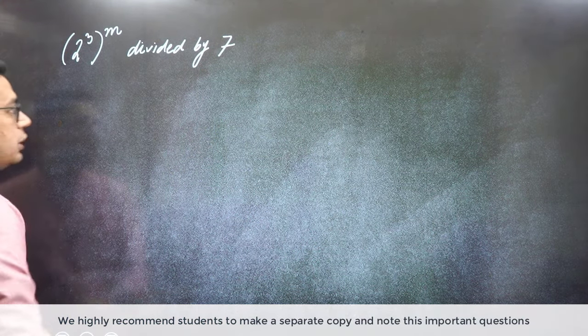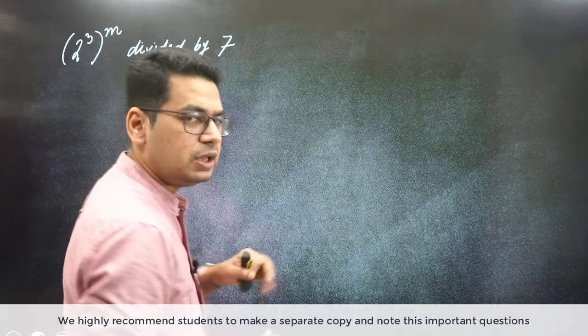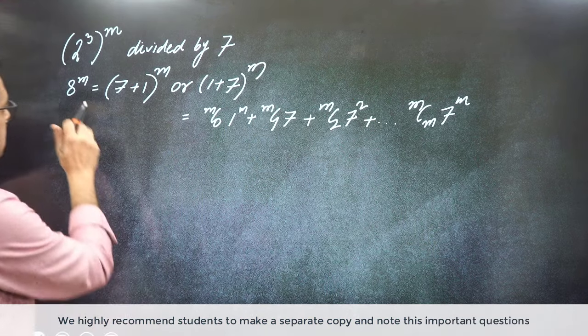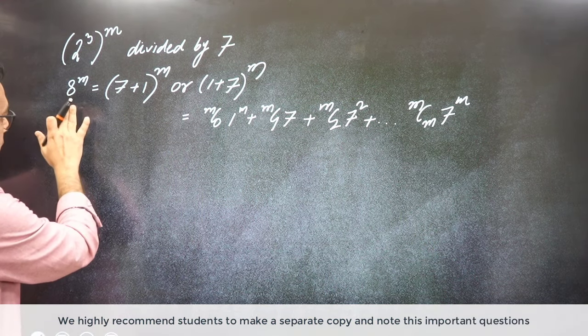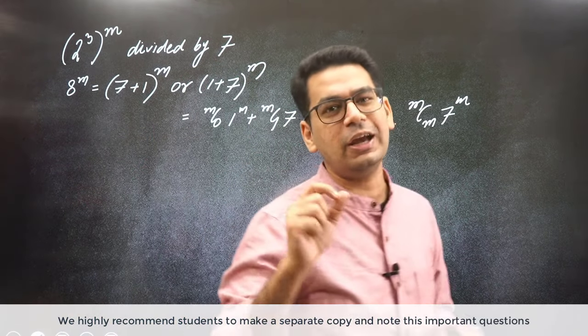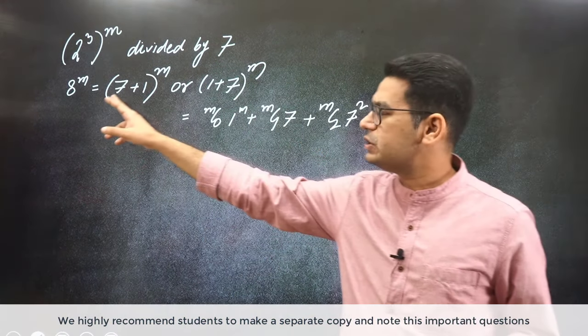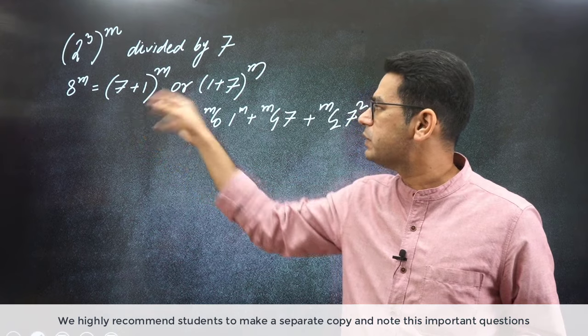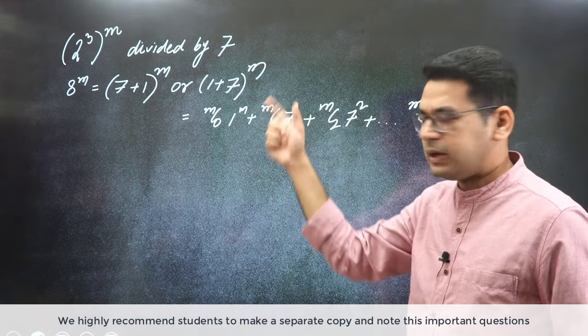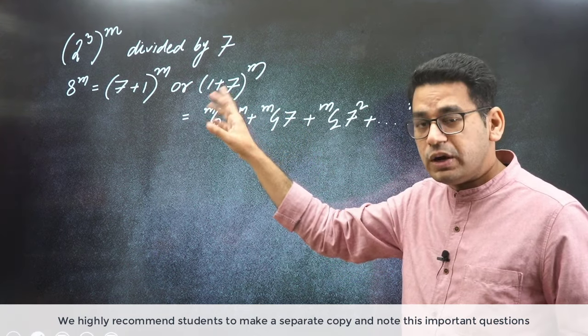So now with the knowledge that you have attained, 2 raised to power 3 means 8. So I can say 8 raised to power m. Now first of all, let's understand with 8 raised to power m. So when I say 8 raised to power m, I can write it as 7 plus 1 or 1 plus 7. If I write 1 plus 7 raised to power m, which is better, you will understand immediately why.